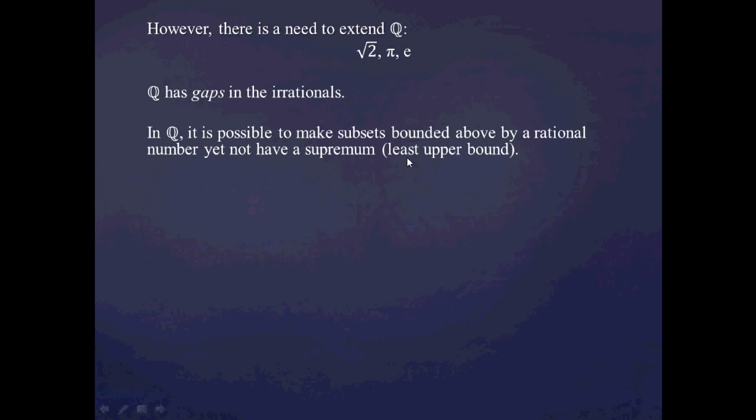Let me explain those terms. Bounded above means there exists a rational number which is greater than or equal to all the numbers in the subset we're considering — that's what an upper bound means. A supremum, or least upper bound, as the name suggests, is the least of all the upper bounds. The supremum is still greater than or equal to all numbers in the set, but it's the least of all possible upper bounds.